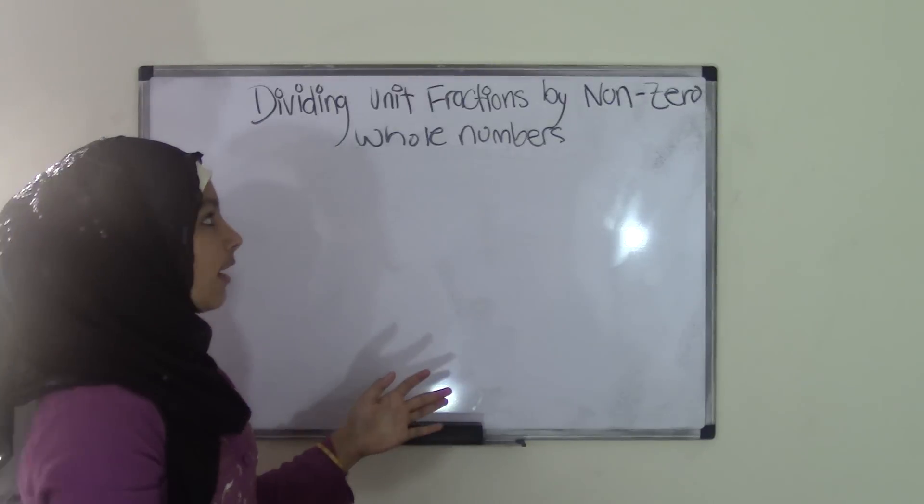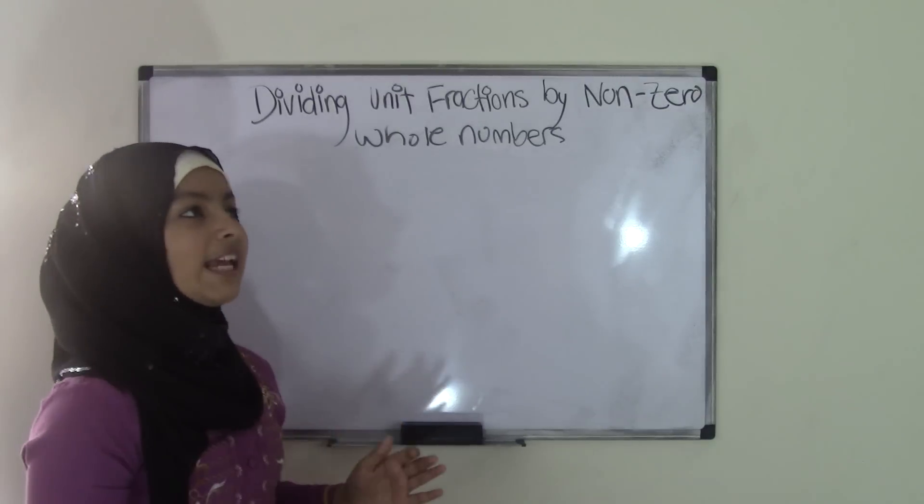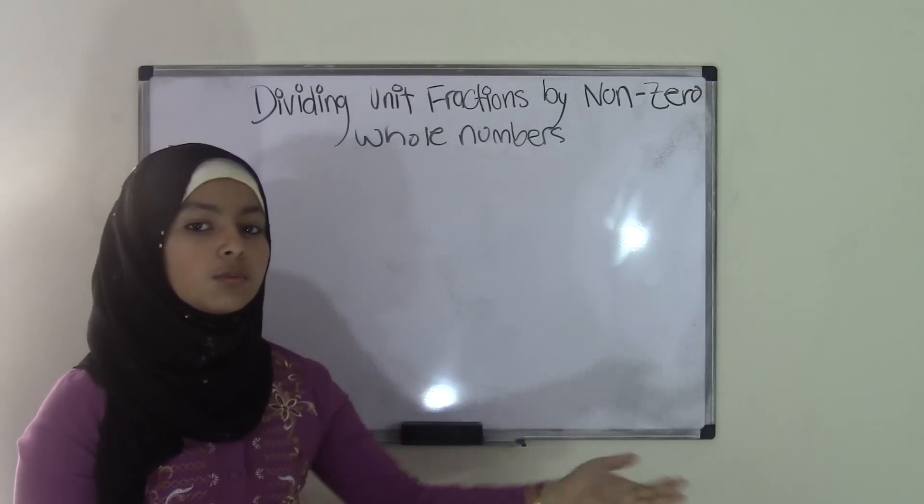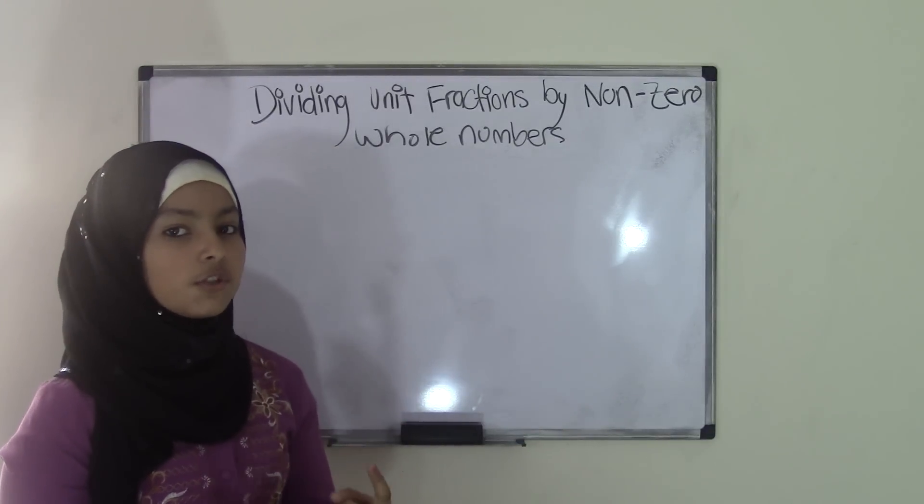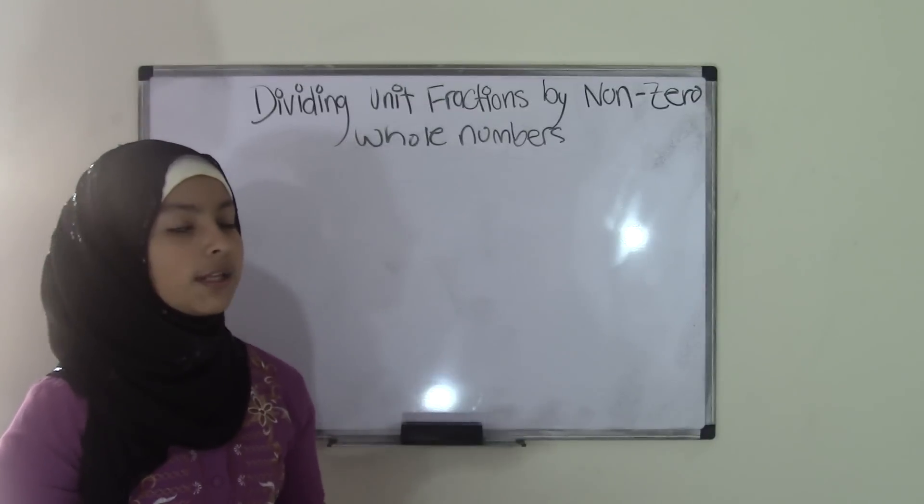Now I know this is a pretty big title and sometimes it can get a little confusing like unit fractions, non-zero whole numbers. Well, just to make it a little simple, unit fractions are just fractions that have numerators that are a unit, which means 1. So it could be 1 half, 1 third, 1 fourth, something like that.